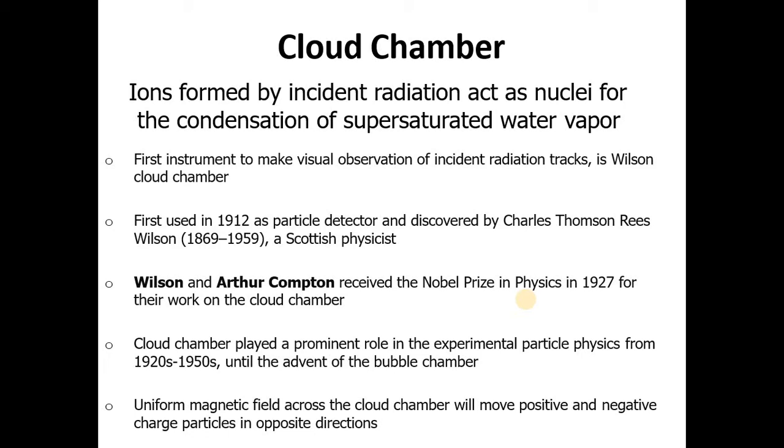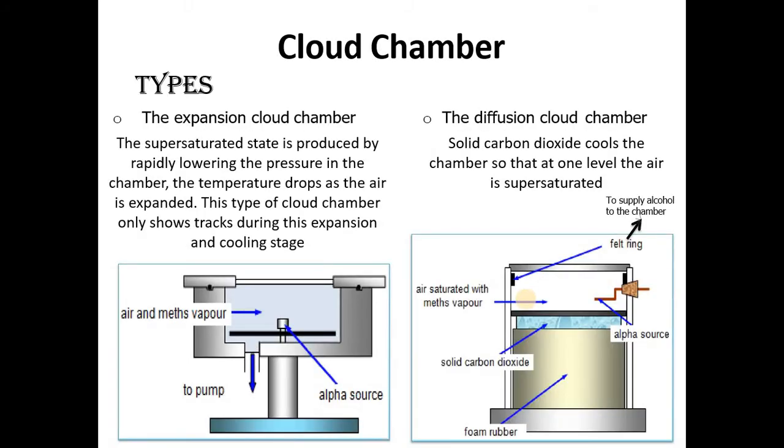A uniform magnetic field across the cloud chamber will move positive and negative charged particles in opposite directions. There are two main types of cloud chamber: first one is the expansion cloud chamber and the second one is the diffusion cloud chamber. The expansion cloud chamber: the supersaturated state is produced by rapidly lowering the pressure in the chamber. The temperature drops as the air is expanded. This type of cloud chamber only shows tracks during the expansion and cooling stage. It is also called the same-day type of chamber. We have air and gas vapor for pumping, so it causes rapid lowering of the pressure in the chamber.